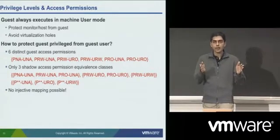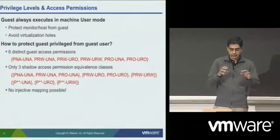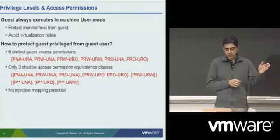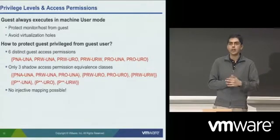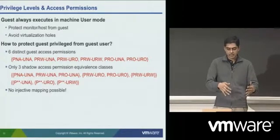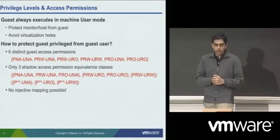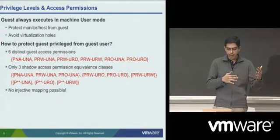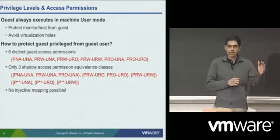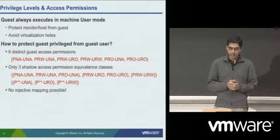The problem is you have privileged mode and user mode, and in each mode you have read-only, read-write, and no access. That gives six distinct access permissions possible — privileged no-access, user no-access, privileged read-write user no-access, and so on. But on the underlying hardware you only have three shadow page table access permission classes available. So you need to map six distinct guest access permissions onto three available hardware classes, and an injective mapping is not possible.